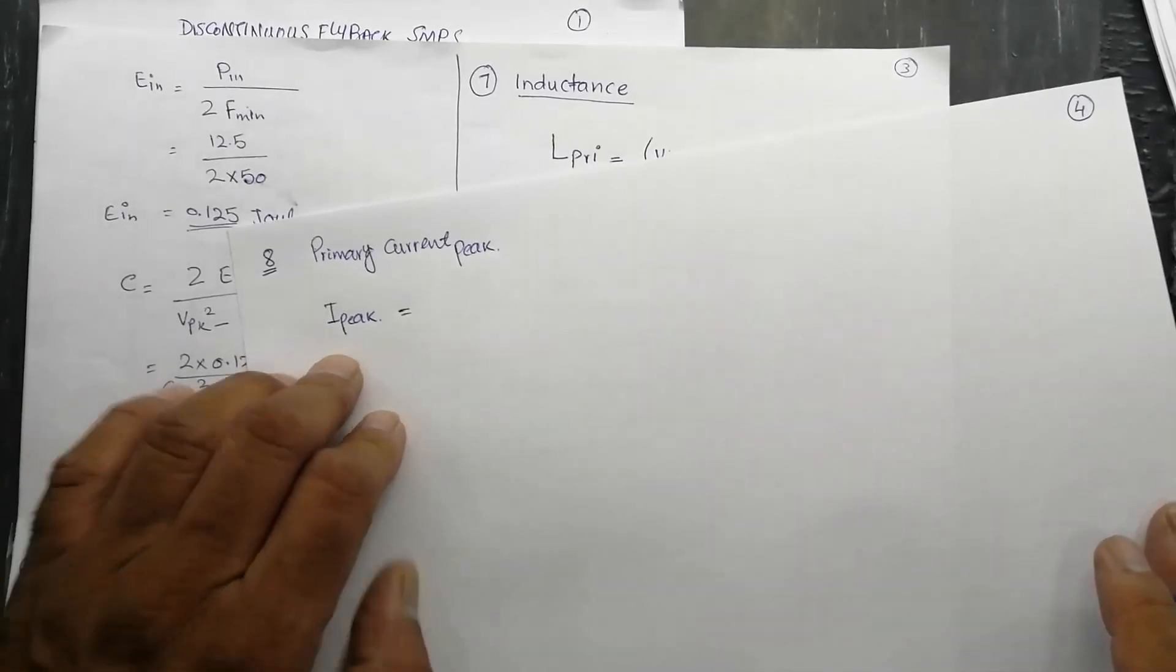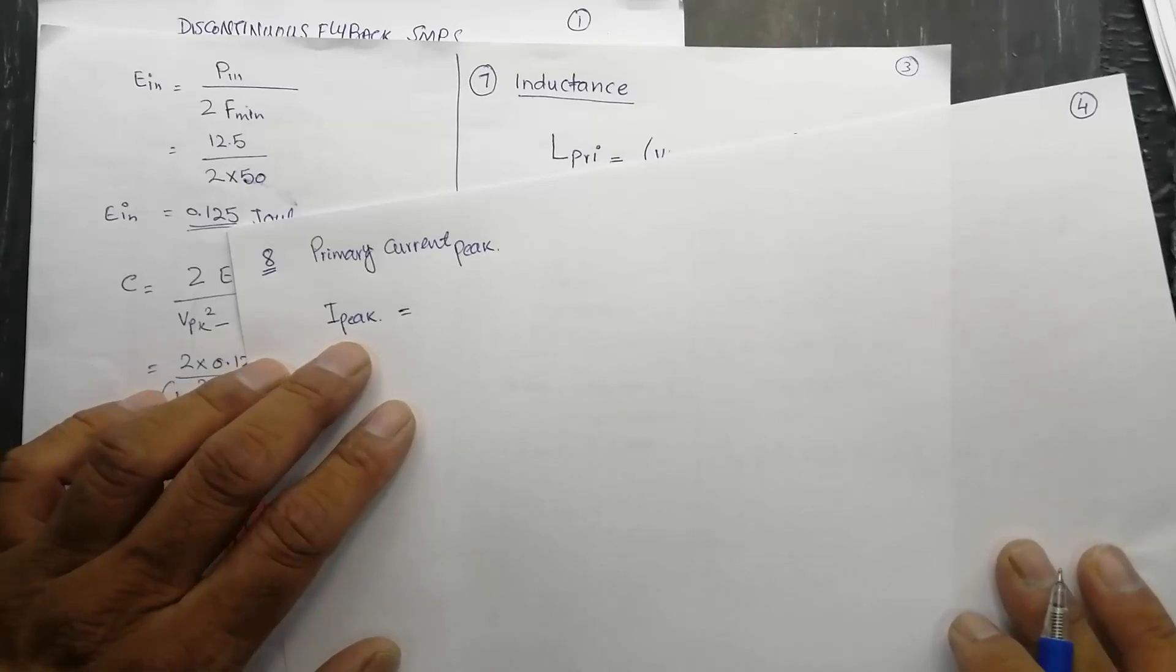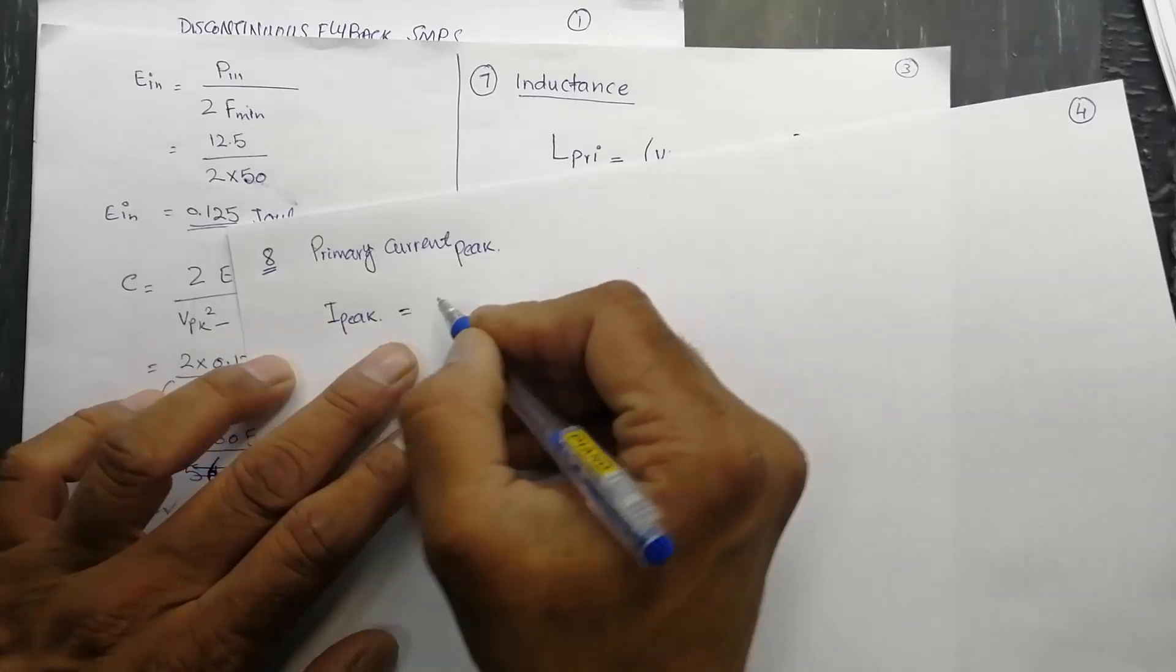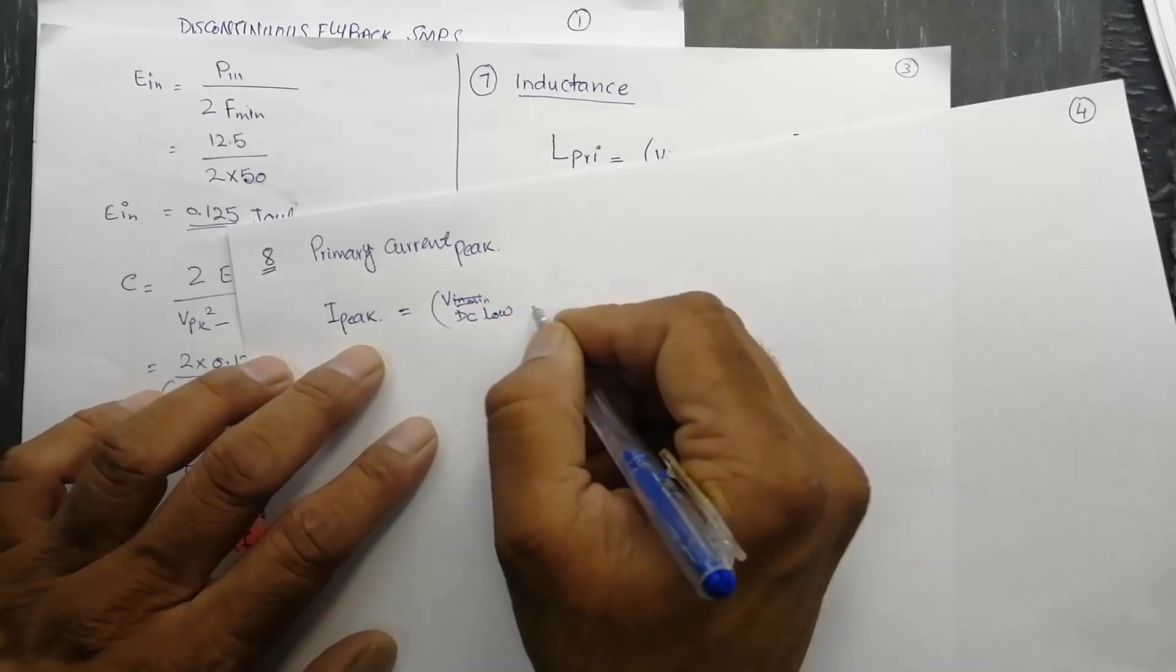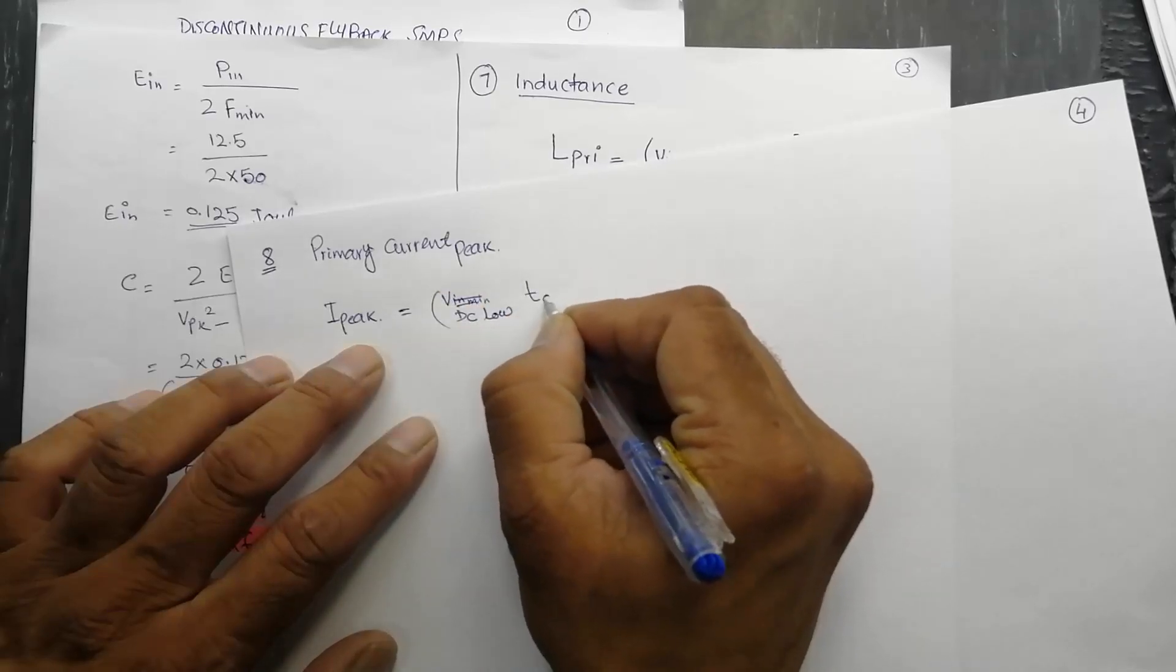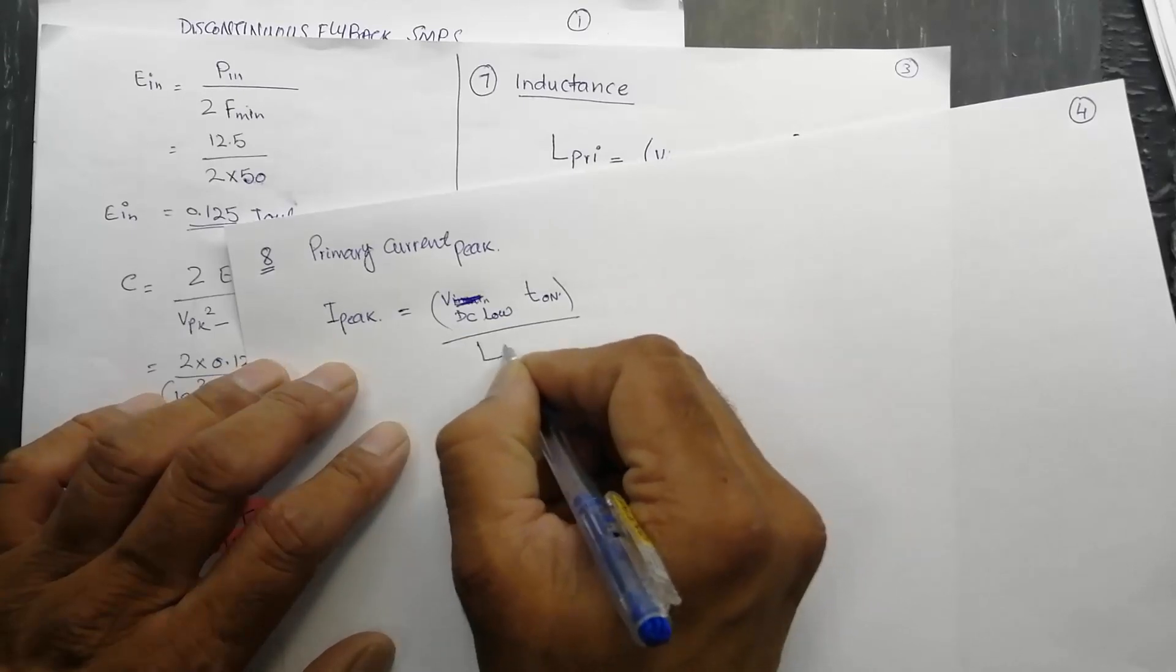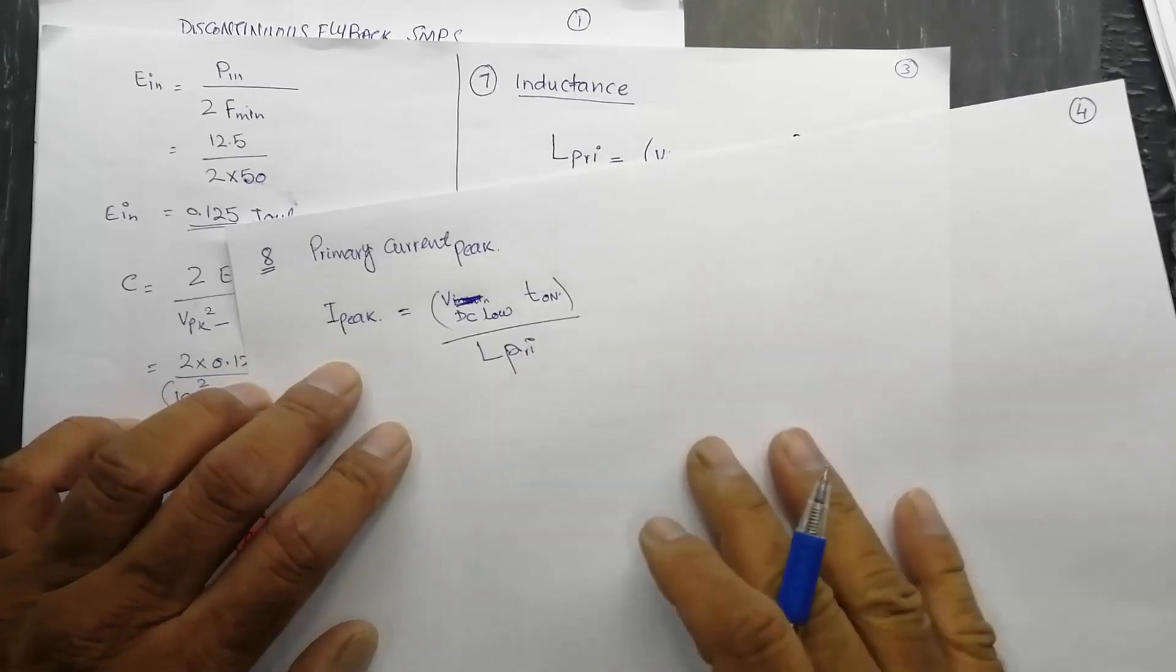So to calculate I_peak, this is the highest amount of current in the primary winding. I_peak equals VDC_low times T_on divided by L_primary.